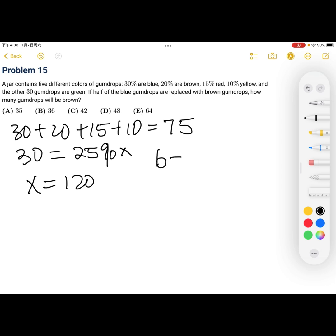blue equals 30% times 120 is 36 gumdrops. And then since we only want to know about the blue gumdrops with the brown gumdrops.